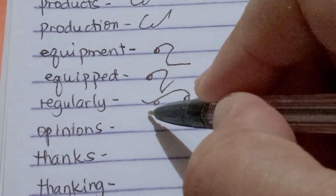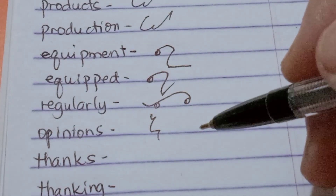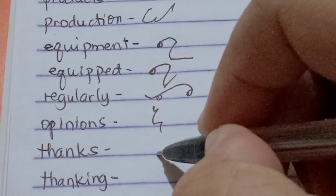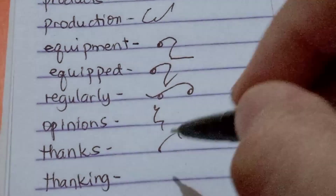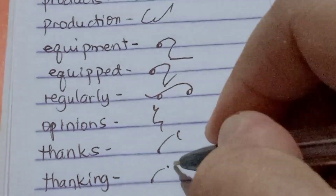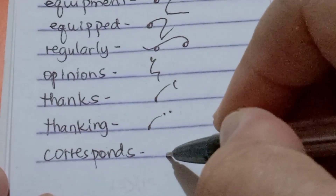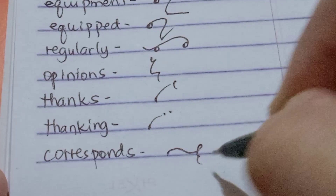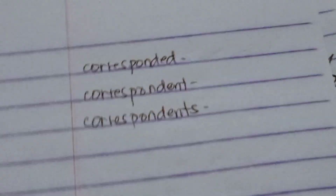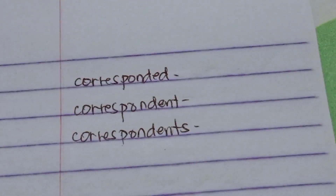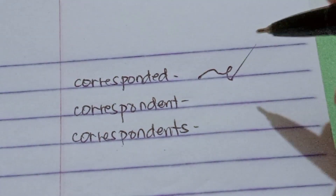Then we have 'opinions' — O-P-N then S. 'Thanks' — over-E-T and S only. 'Thanking' — over-E-T and a dot. Then 'corresponds' — K-R-E-S then S only. 'Corresponded' — K-R-E-S then D.